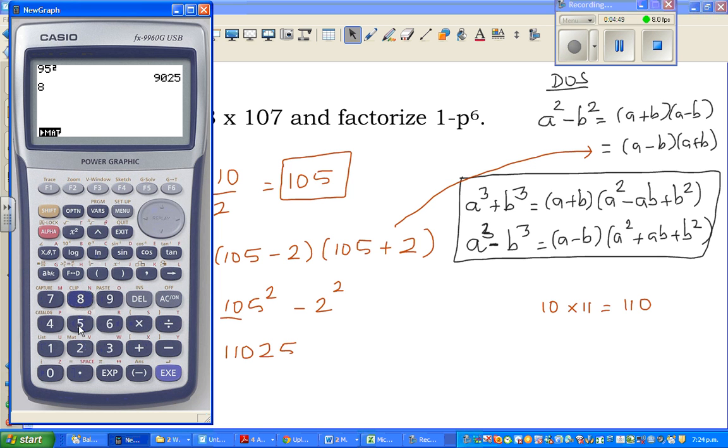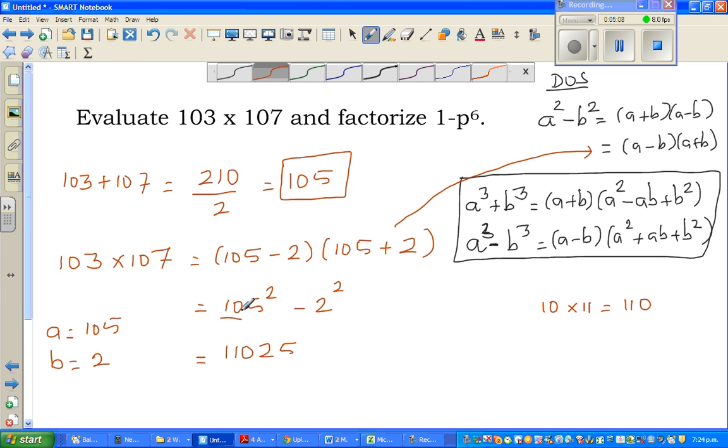If it is 85 squared, it is 7225. 72 is 8 times 9. If it is 65 squared, I know 6 times 7 is 42, so it would be 4225. This is a very neat way; this can be only used for numbers ending with 5.